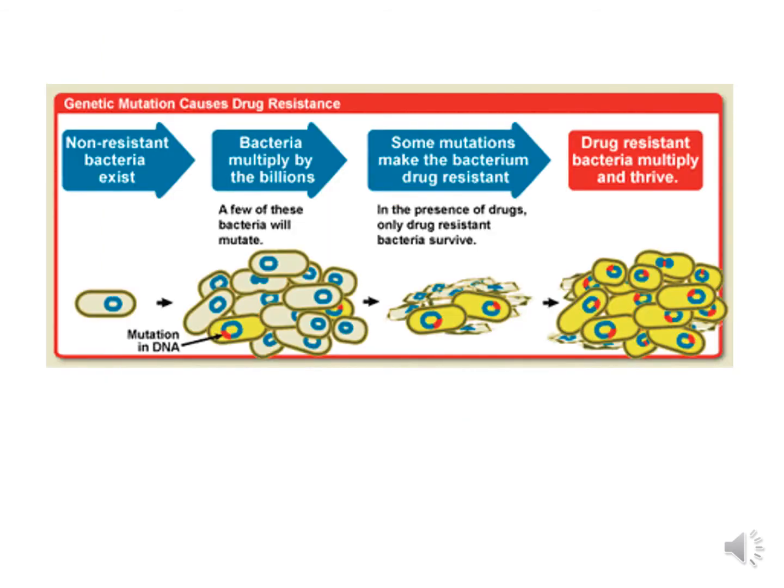We're going to look in more detail at how genetic mutations cause drug resistance. We start off with non-resistant bacteria that multiplies. Some of the bacteria mutate to become resistant to antibiotics. The antibiotic-resistant gene is able to be transferred to non-resistant bacteria — this is known as gene transfer. In the presence of antibiotics, only the resistant bacteria will survive and continue to thrive throughout the body.